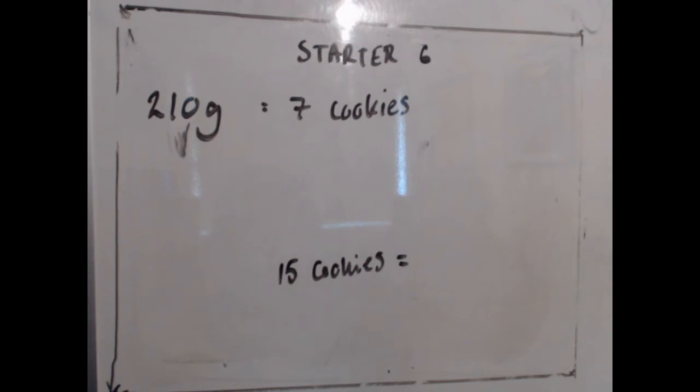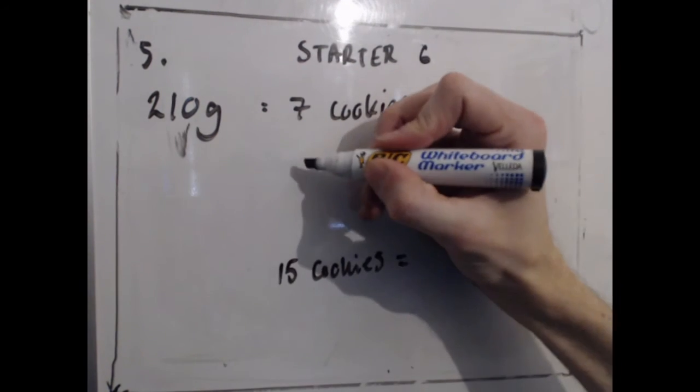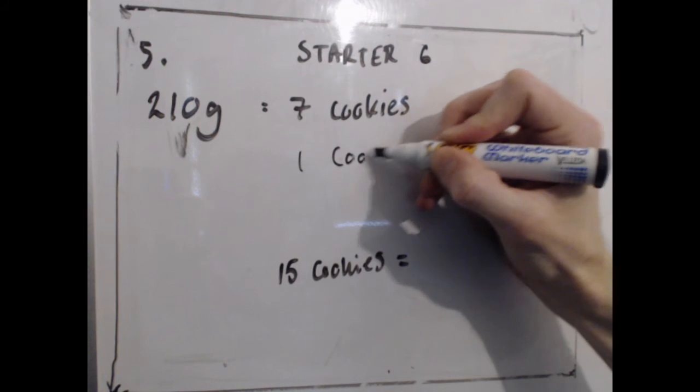Question number 5. So Martin's baking some cookies, and he sees 210 grams of flour, good luck finding that anywhere, for 7 cookies. Now, for one cookie, how much flour are we going to need?